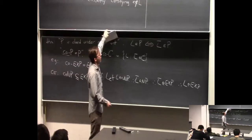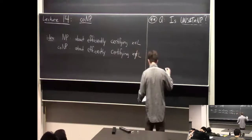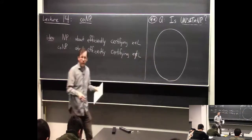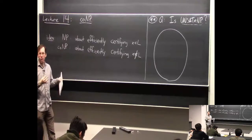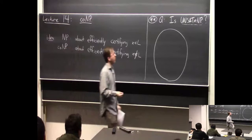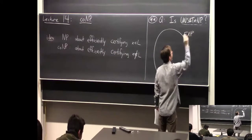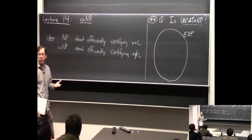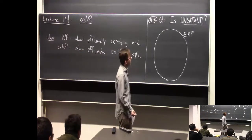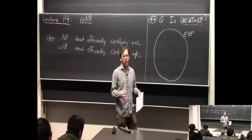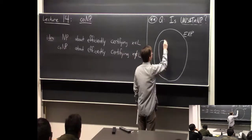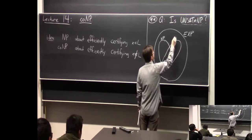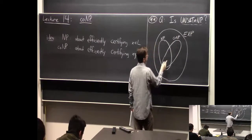I bring this up to start drawing a picture of complexity classes. It's always a little weird with classes like NP and co-NP that involve non-determinism. EXP is a good class to put everything inside—any language in NP, co-NP, etc., can at least be solved in exponential time on a normal computer. So let's put NP and co-NP inside EXP. So far, we don't know anything about their relationship to each other, so we draw the most general Venn diagram: NP and co-NP overlapping.